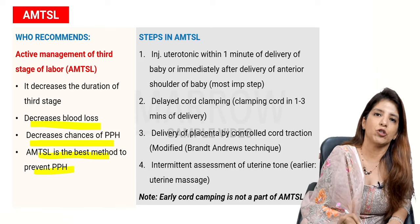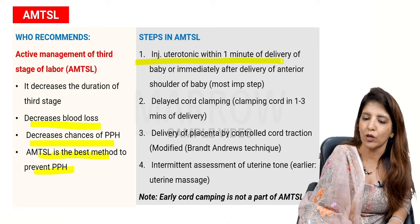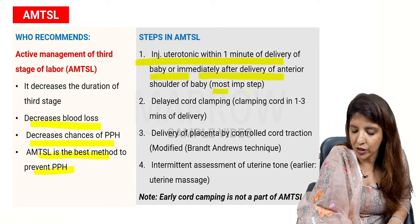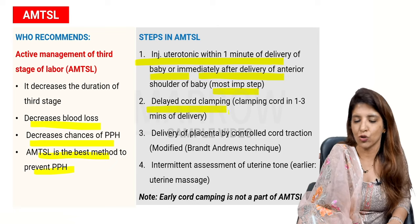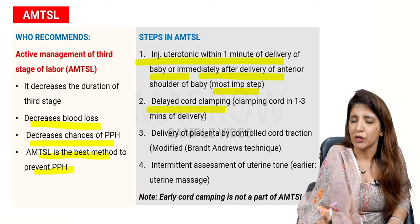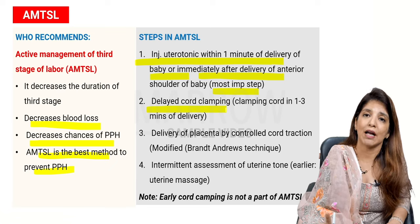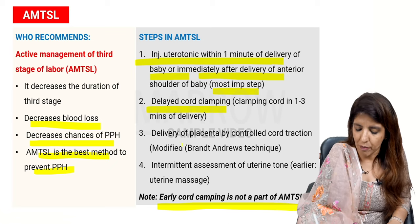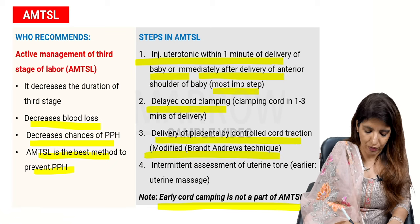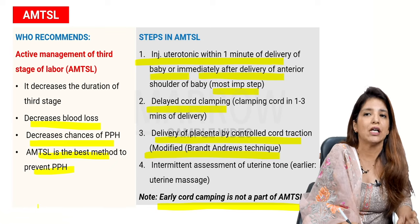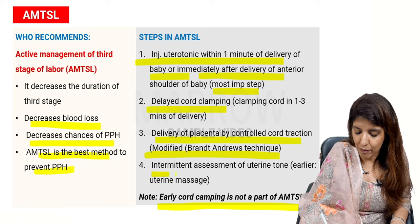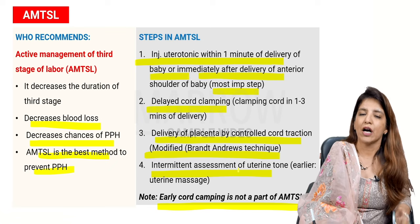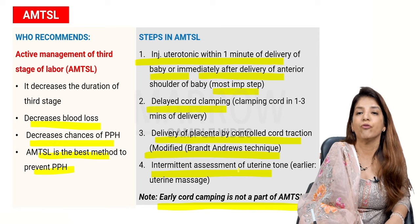There are four steps in AMTSL. Step one: injection uterotonic within one minute of delivery of the baby, or immediately after delivery of the anterior shoulder — this is the most important step. Step two: delayed cord clamping, where the cord is clamped between one to three minutes. Step three: delivery of the placenta by controlled cord traction or modified Brandt-Andrews technique, only if a skilled birth attendant is present. Step four: intermittent assessment of uterine tone. Note that uterine massage is now part of PPH management, not AMTSL.